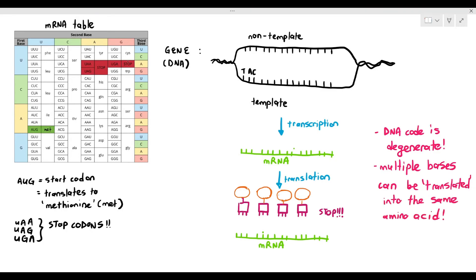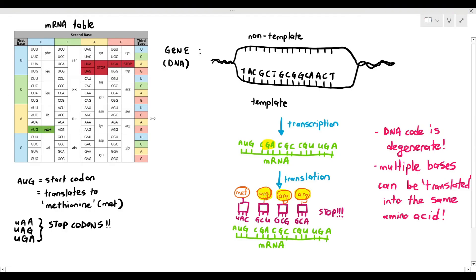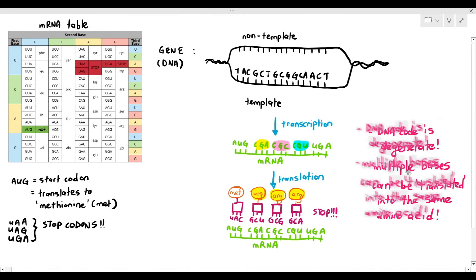Let's try one. Let's say the gene is TAC GCT GCG GCA and ACT. So the mRNA is going to be AUG CGA CGC CGU and UGA. Now, interestingly, the first tRNA is going to be carrying methionine, but the second, third, and fourth tRNAs, if you notice, they are all carrying the same amino acid, arginine, because multiple codons can translate to the same amino acid.